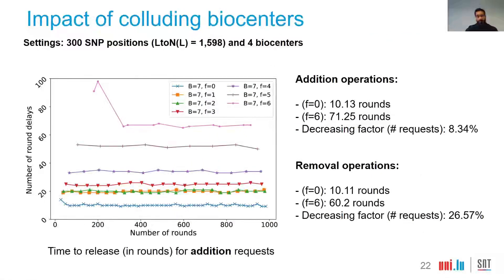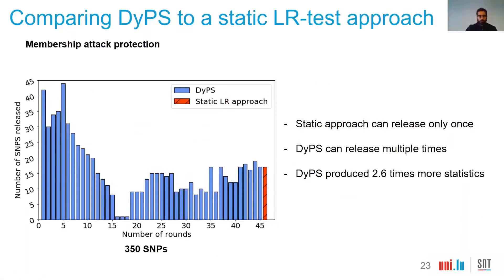This slide presents the impact of colluding biocenters. The chart shows operational delays for additions — and for both additions and removals the behavior is similar. As expected, as we increase the number of colluding biocenters in the federation, it becomes more difficult to find a safe batch of requests. We also compare DIPs to a static likelihood-ratio approach for protecting releases against membership attacks. DIPs is able to release results since the beginning of the experiment, whereas the static LR approach can only release at the end when all genomes have been gathered. Furthermore, DIPs does not degrade the number of SNPs, and at some rounds DIPs was even able to consider more SNPs than the static approach.